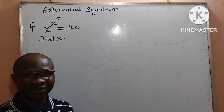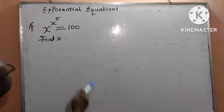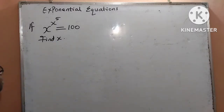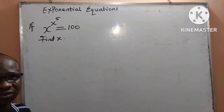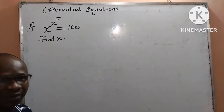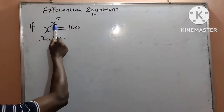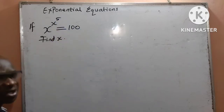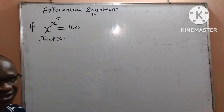I am Tutor Clotus Okoli. In today's math class we shall be evaluating this exponential equation. We are given that if x to the power of x to the power of 5 is equal to 100, then we should get the value of x.